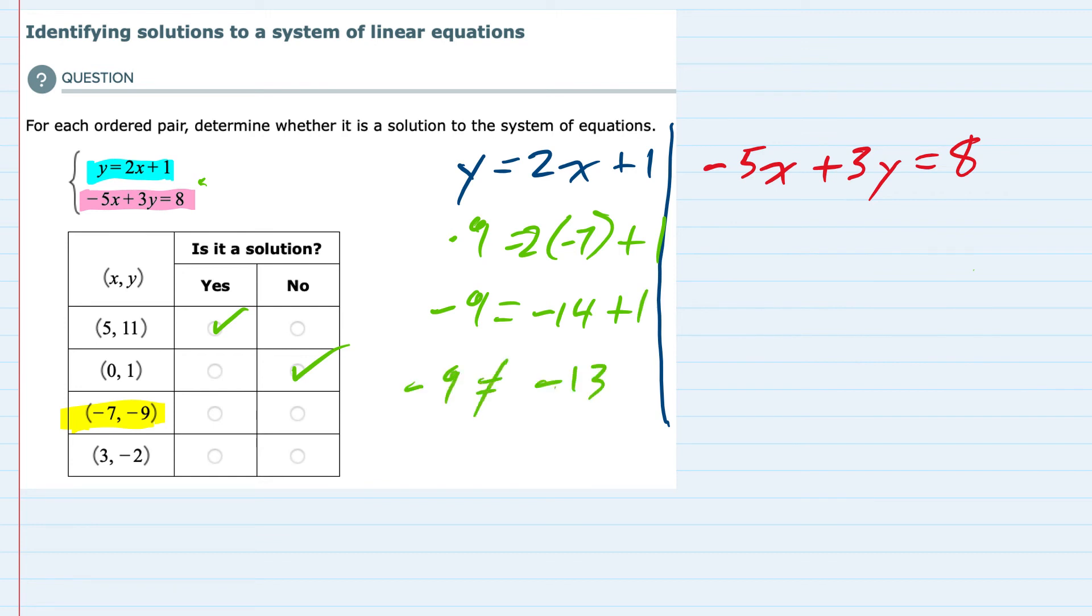So the left hand and right hand side are not equal. As soon as we have failed to meet one of the equations, then we can already say no. We don't need to test the second equation because even if it did work, it would not be a solution to both equations.